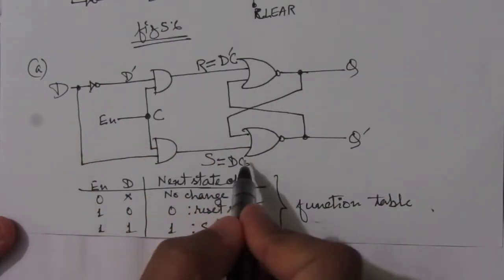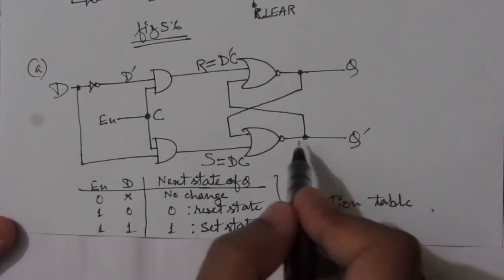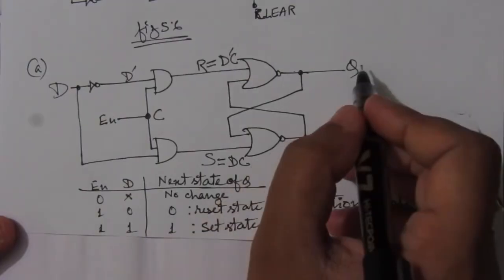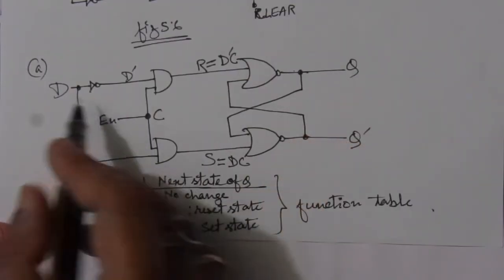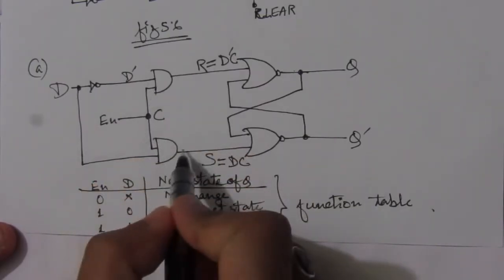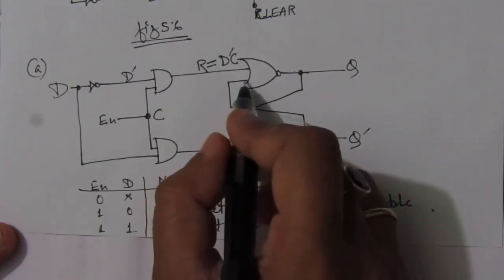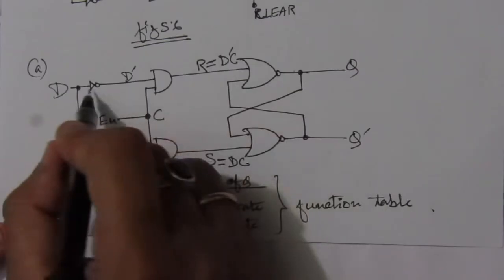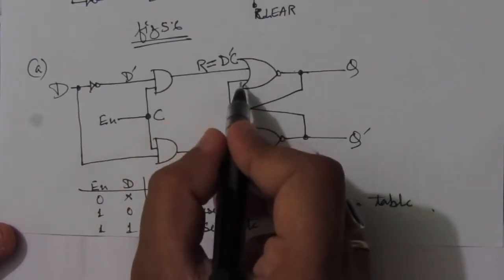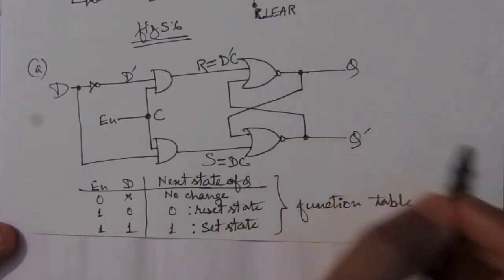When D is 1: D-bar will be 0, so R = 0·1 = 0. The lower AND gate gives S = D·C = 1·1 = 1. Since one NOR gate input is 1, Q-bar will be 0. This 0 feeds back, and 0+0 at the upper NOR gate gives Q=1. So whenever D=1, the output Q=1, confirming the circuit operates as a D latch.